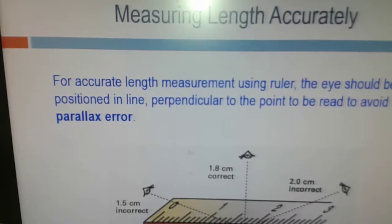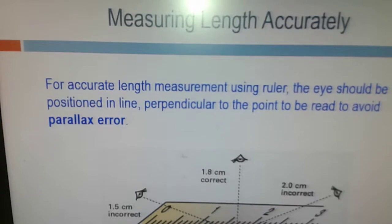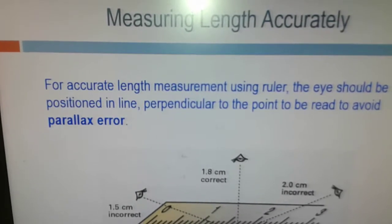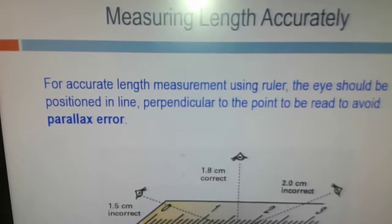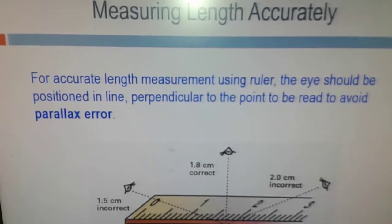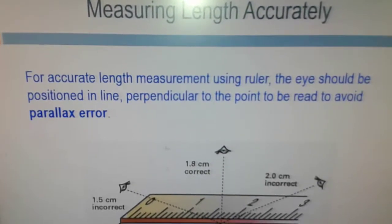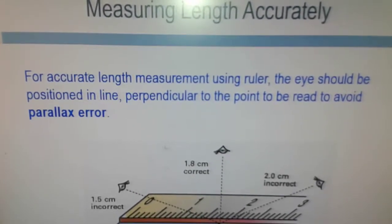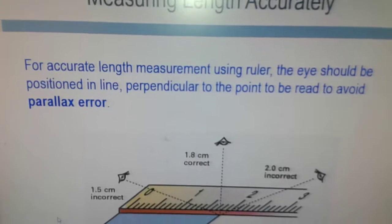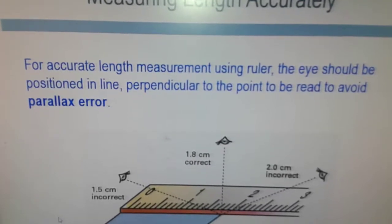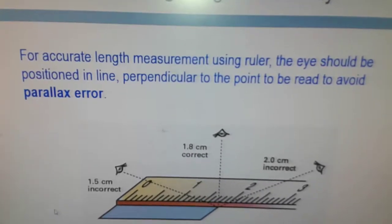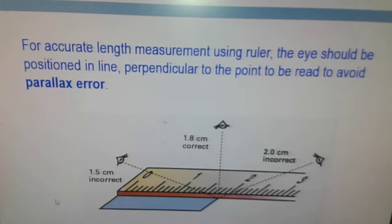For accurate measurement with a ruler, you must make sure that there is no parallax error. In other words, the eye must be positioned perpendicular to the point to be read, to avoid parallax error as shown.